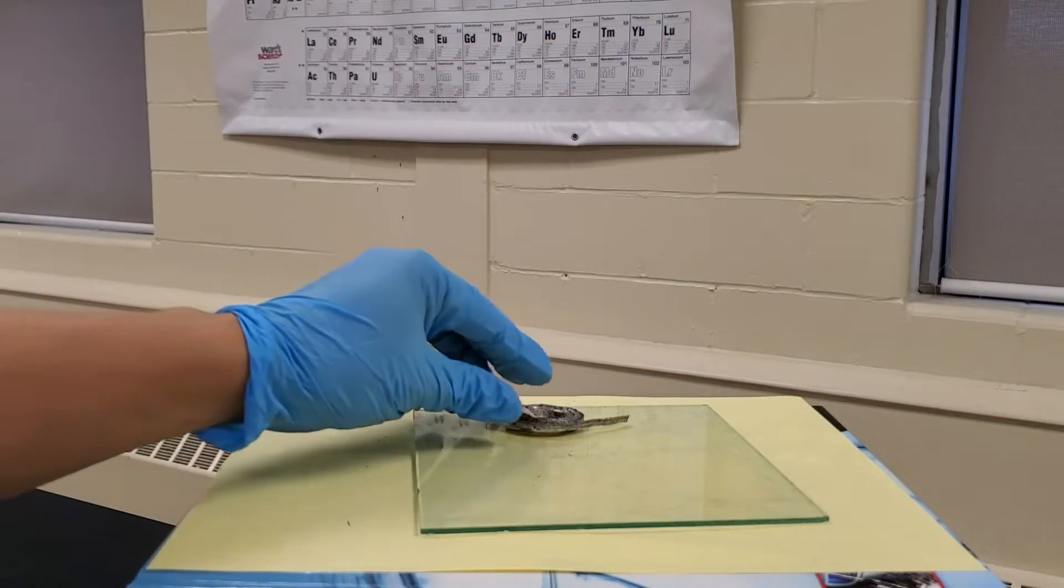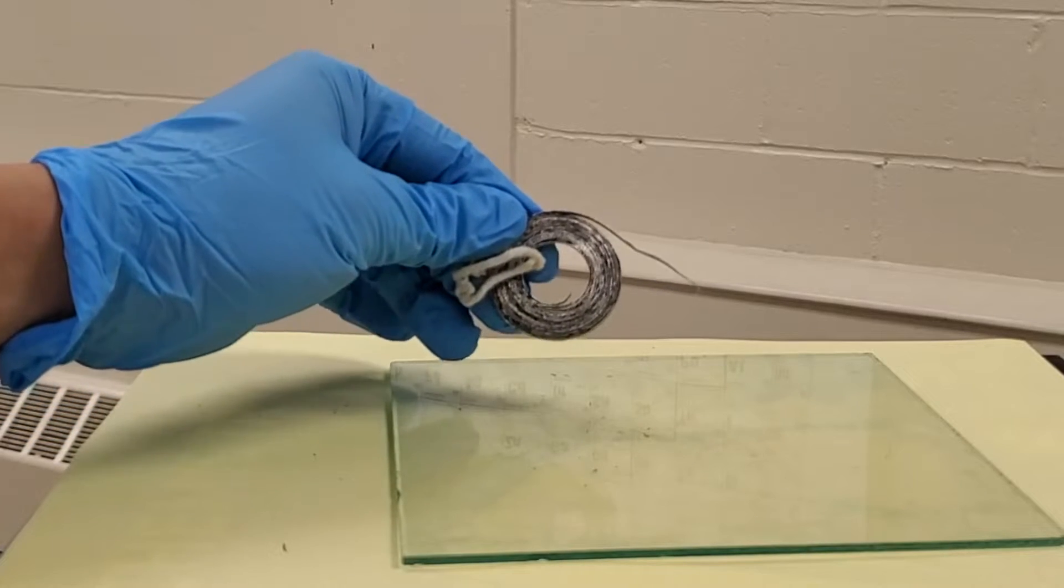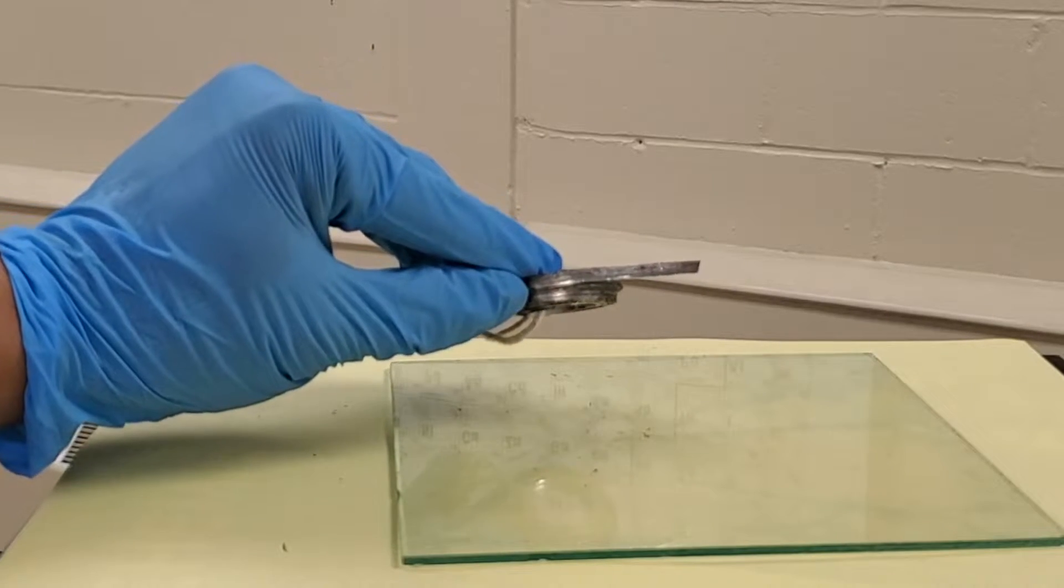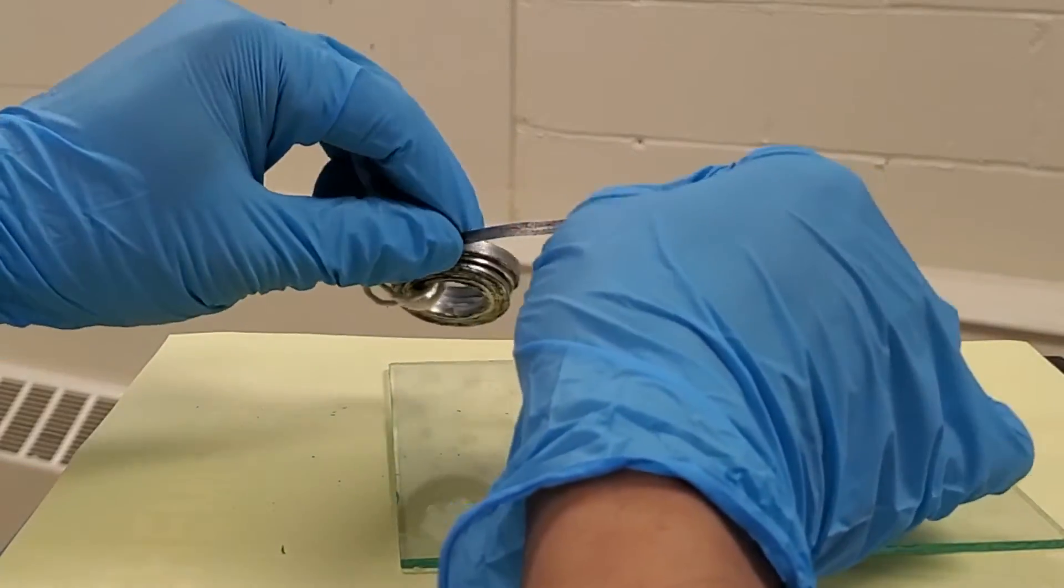This is what magnesium looks like. It comes in a coiled ribbon. It has all the characteristic physical properties of a metal. It's shiny, malleable, flexible, and hard.